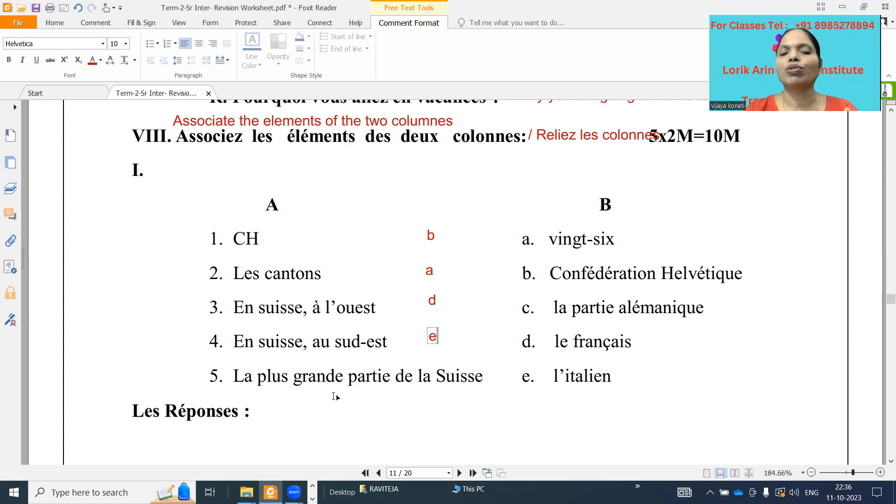And next one, 'la plus grande partie de la Suisse.' The most biggest part of Switzerland, what they are speaking, 'la partie allemanique.' German speaking part. D'accord? So match the following, very carefully we have to do, because it carries two marks each one. Five into two, ten marks. One going wrong, automatically another one also wrong. So carefully we have to do.